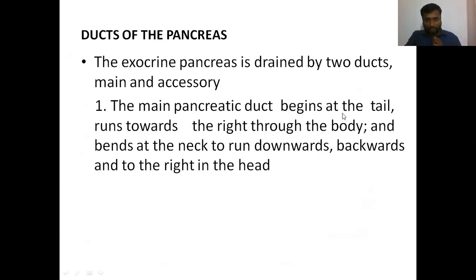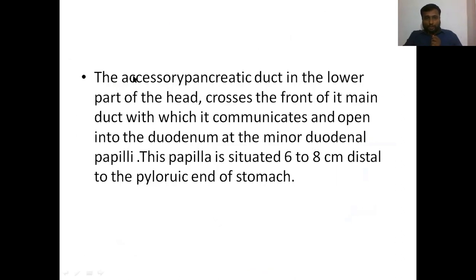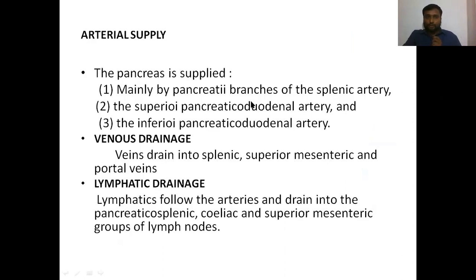To summarize the ducts: the main pancreatic duct begins at the tail, runs towards the right through the body, bends at the neck, runs through the head, then joins with the bile duct to form the hepatopancreatic ampulla, and opens into the second part of the duodenum through the major duodenal papilla. The accessory pancreatic duct opens into the second part of the duodenum through the minor duodenal papilla.